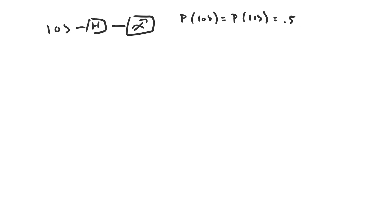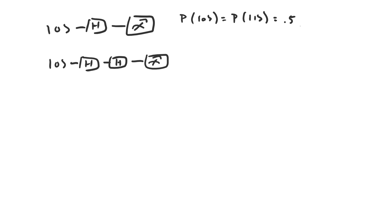A quantum circuit where we apply the Hadamard gate twice would look like this. Again, we start with a qubit in the state |0⟩, pass it through two Hadamard gates, and make a measurement. Because the Hadamard gate is its own inverse, applying two Hadamard gates effectively does nothing. So when we make the measurement, the qubit is guaranteed to be in the state |0⟩, and the probability of measuring |0⟩ is 1.